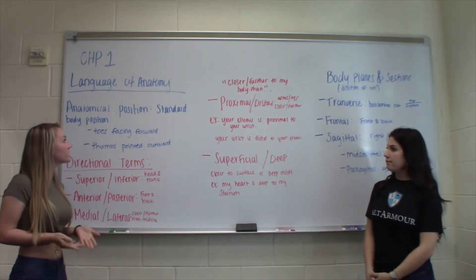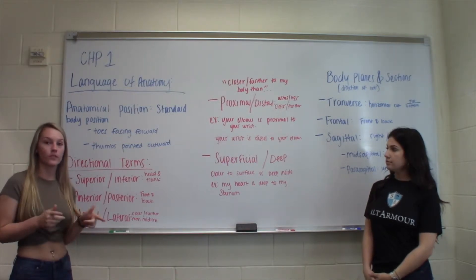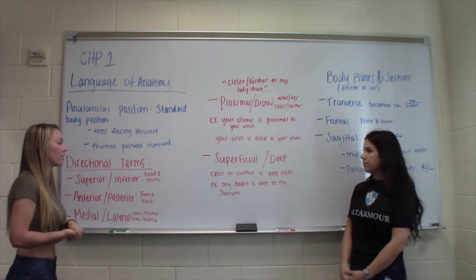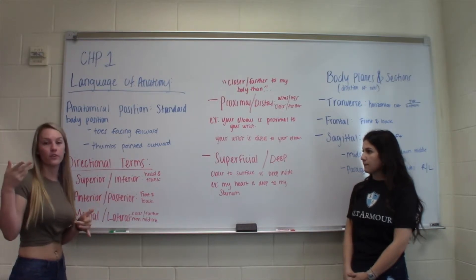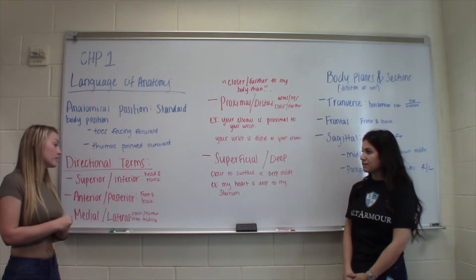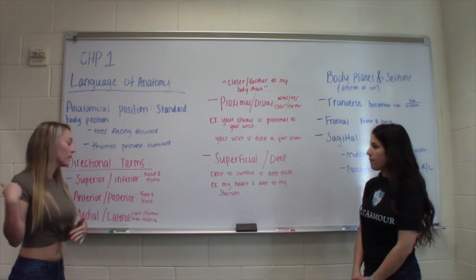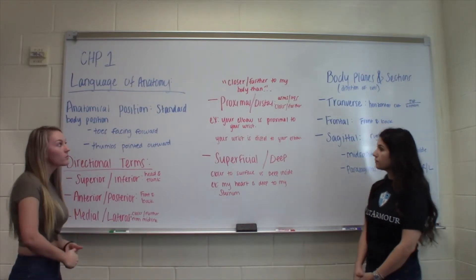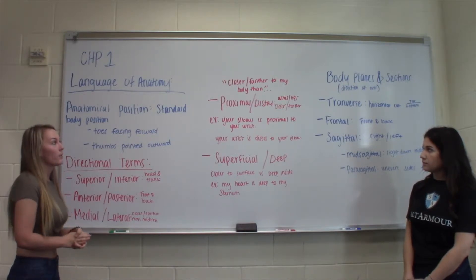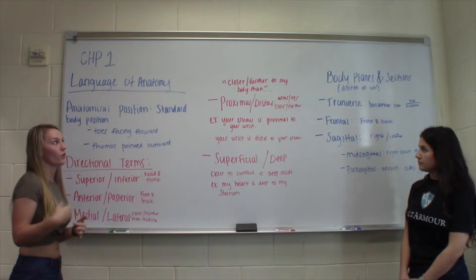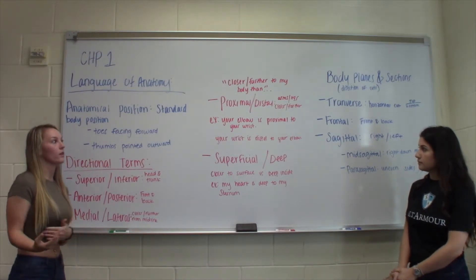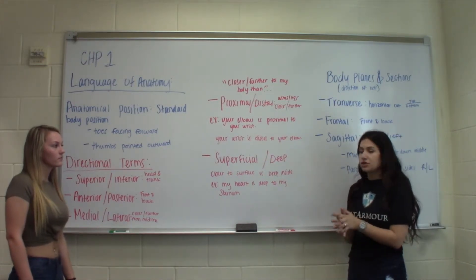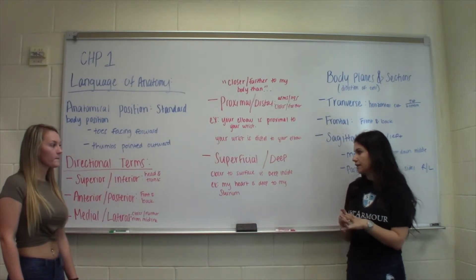This is the language of anatomy. The anatomical position is the standard body position where your toes are facing forward and your thumbs are facing outward. Directional terms: superior means above and inferior is below, used for the head and trunk. Anterior is front, posterior is back. Medial is closer to your midline, lateral is further away. Proximal means closer to the body and distal means further away — for example, your elbow is proximal to your wrist and your wrist is distal from your elbow.